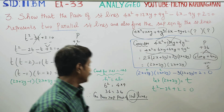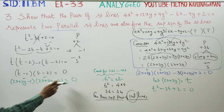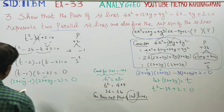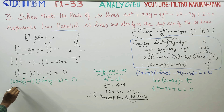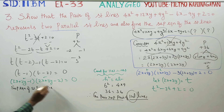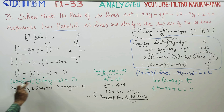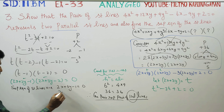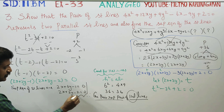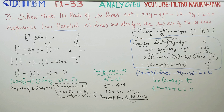The two separate equations are 2x + 3y - 1 = 0 and 2x + 3y - 2 = 0. This is the final answer. This is a very important sum — don't miss this. Thank you.